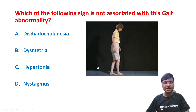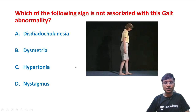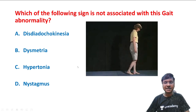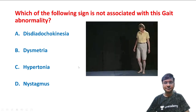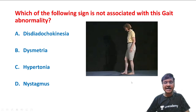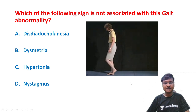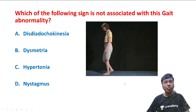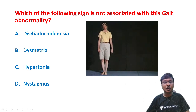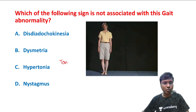This particular person is trying to walk in a particular fashion. If there is abnormality of this particular gait, what is that called? What this individual has done is nothing but tandem walking.